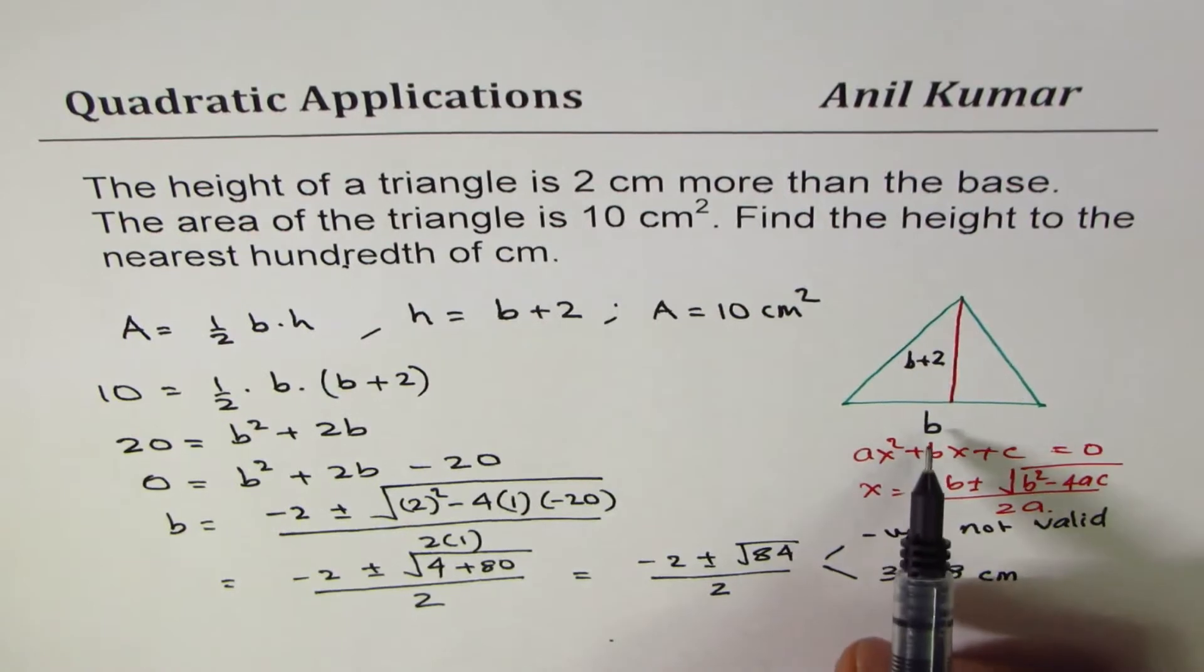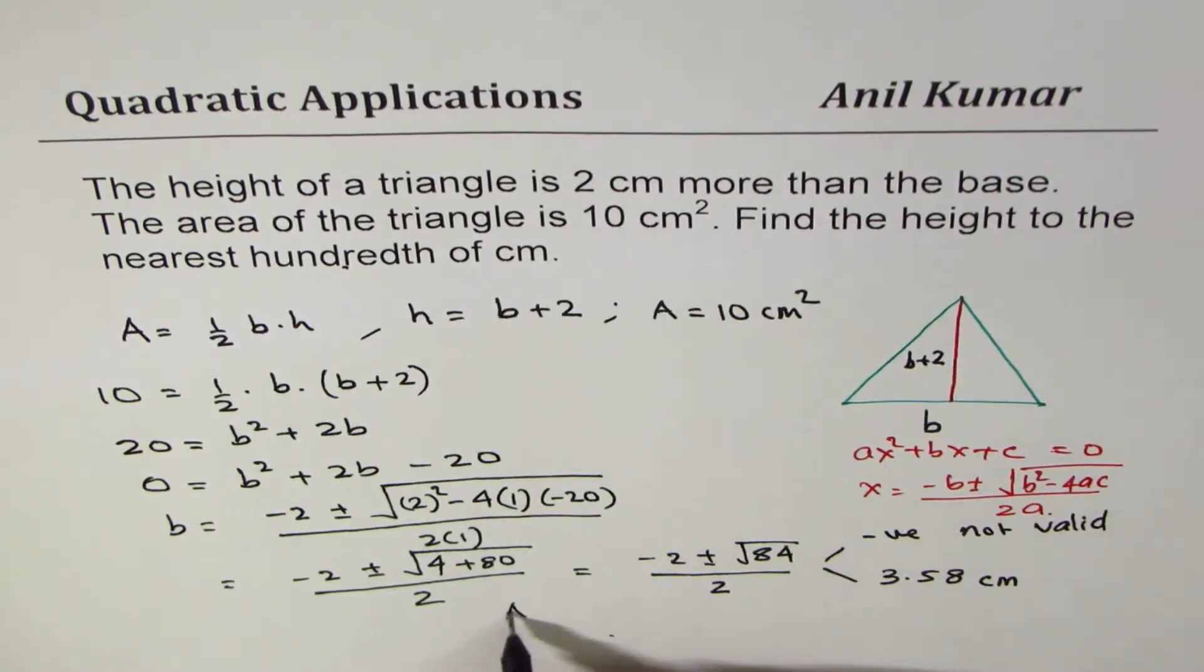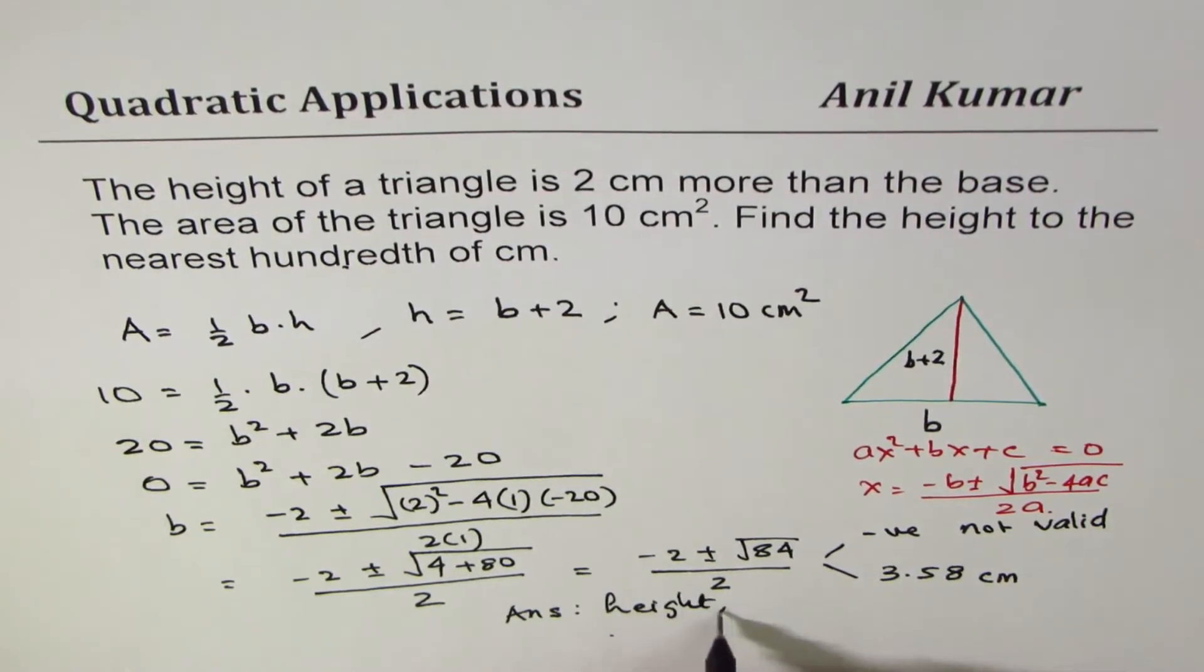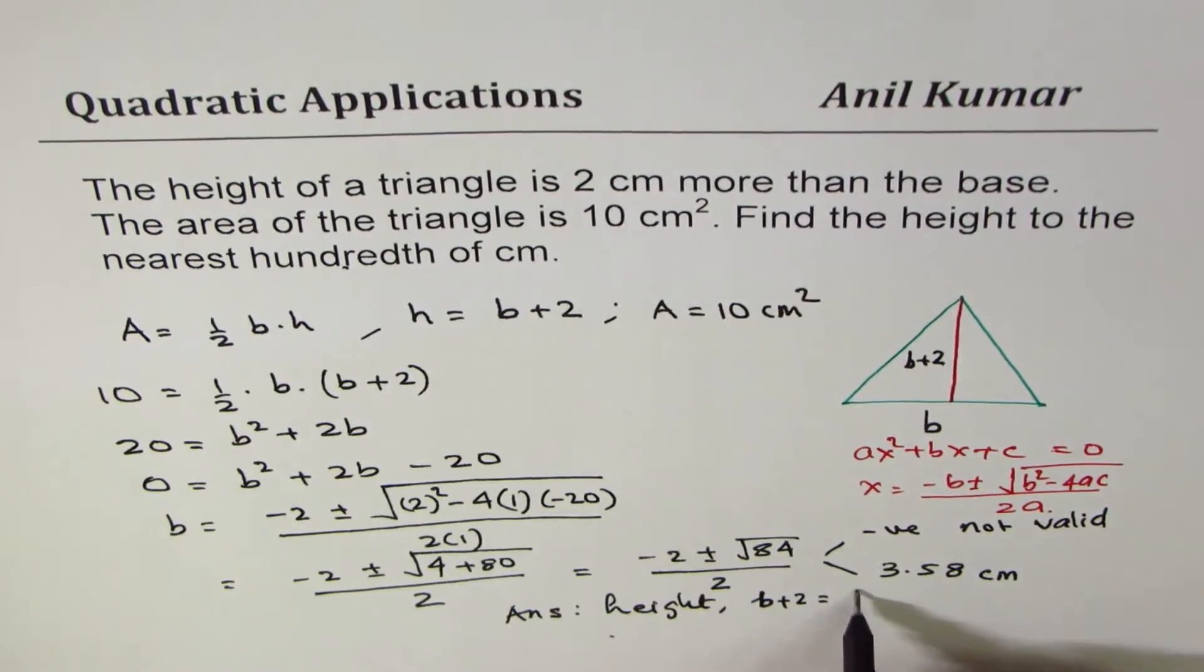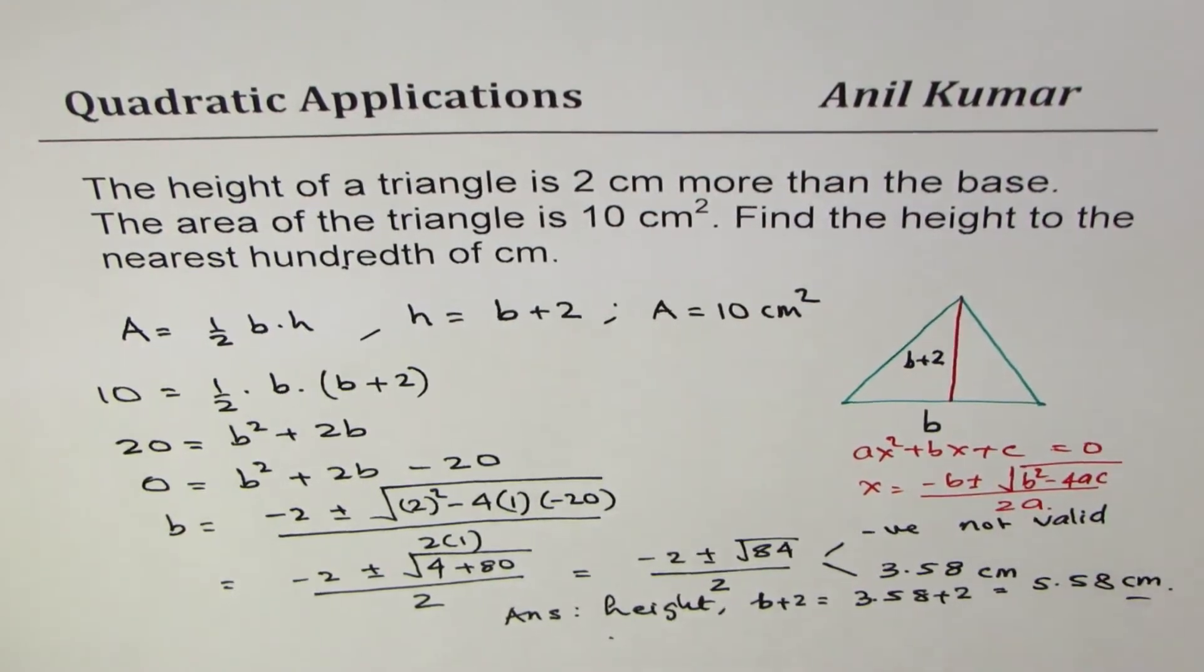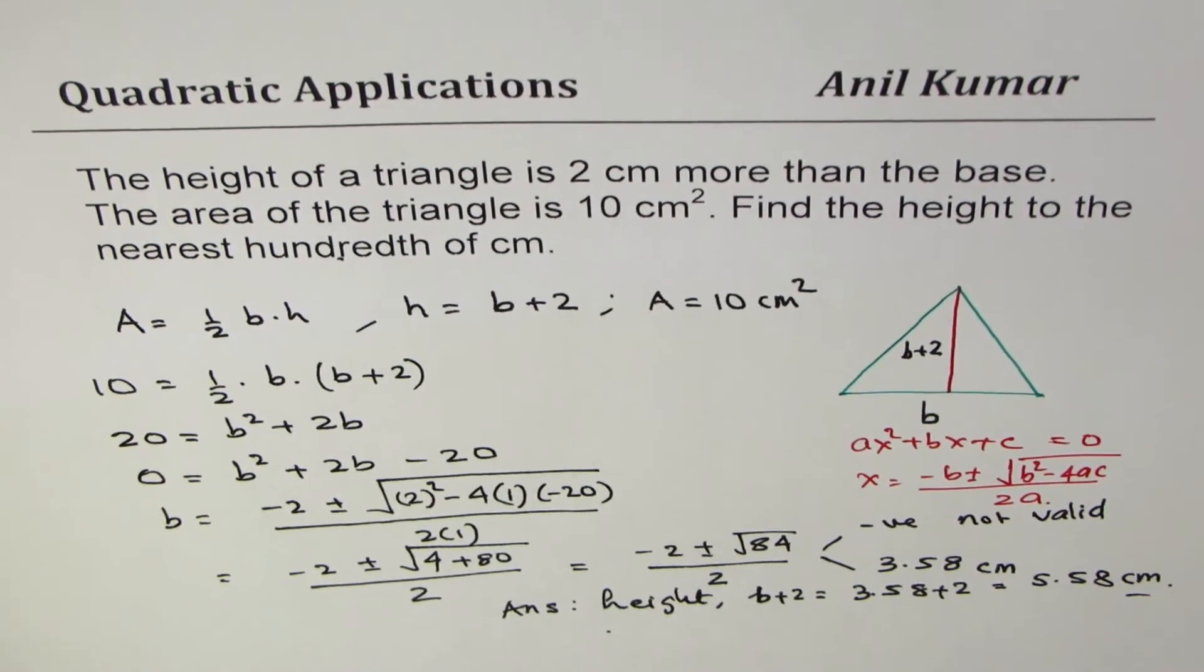What is the height? So the answer is actually height. Height is equals to base plus 2 which is 3.58 plus 2 or 5.58 centimeters. That is how you get your answer.